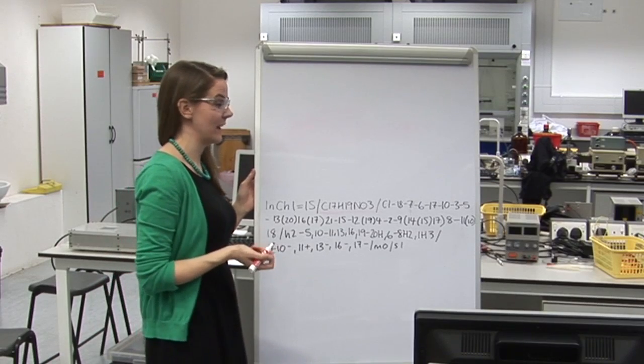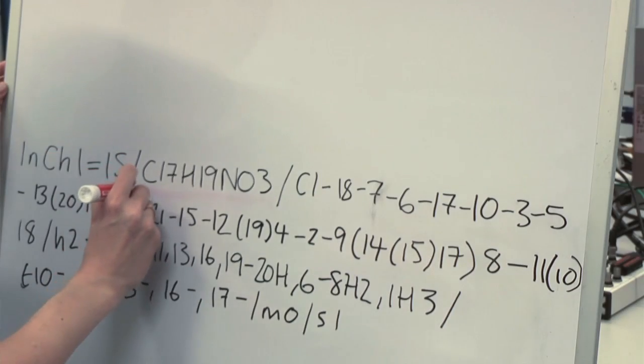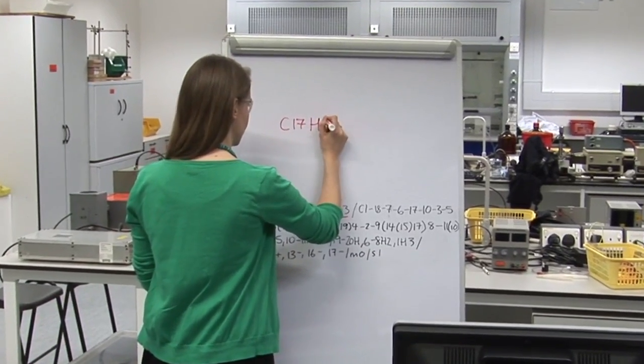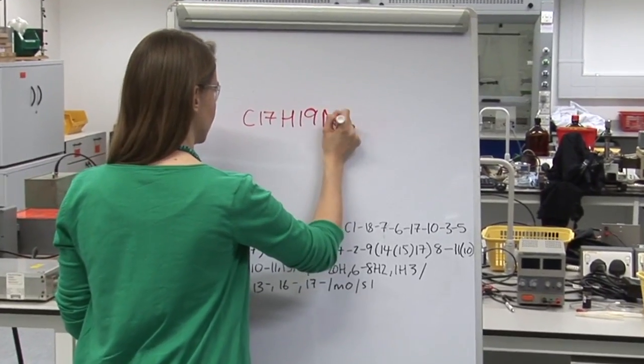The INCHI is made up of layers. The first layer shows the chemical formula. For morphine, this is C17H19NO3.